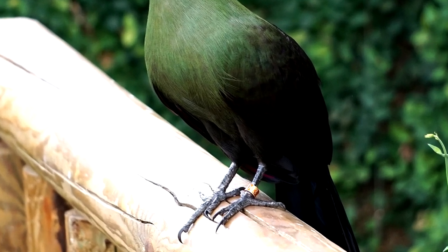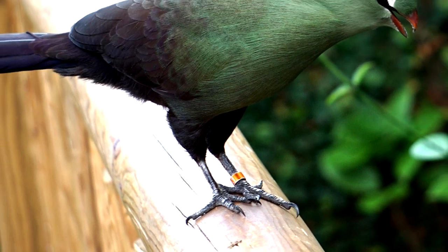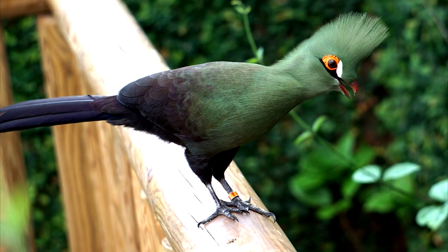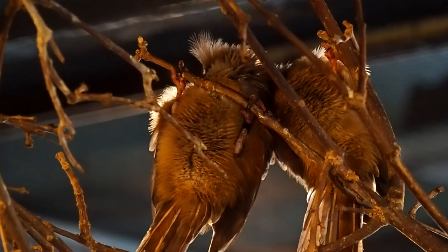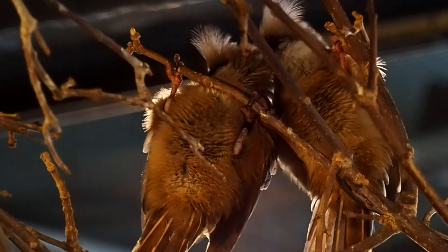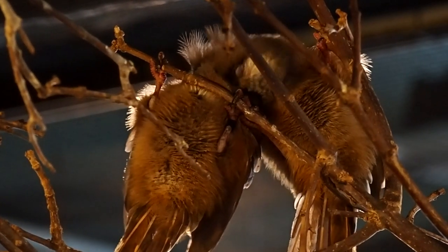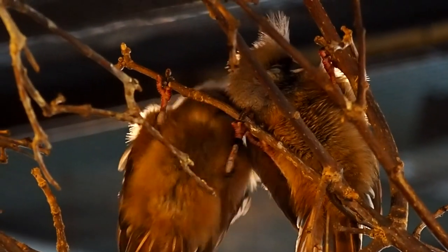Turacos, which live in trees and jump between branches, have transformer feet. Their fourth toe can rotate forward or back, depending on whether they need to jump or climb. And mousebirds take that one step further. They can rotate their first and fourth toes forward at the same time, so they can have all four toes forward to hang upside down, or three forward, or two forward.